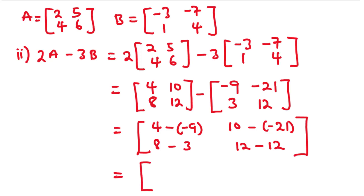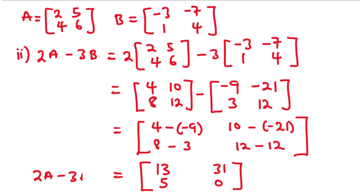Let's simplify. 4 minus negative 9 is the same as 4 plus 9, which is 13. 10 minus negative 21 is 10 plus 21, which is 31. 8 minus 3 is 5. And then 12 minus 12 is 0. Therefore, the matrix 2A − 3B is equal to [13, 31, 5, 0]. So basically this is how to multiply a matrix by a scalar. Now in the next section, we are going to learn how to multiply two matrices.